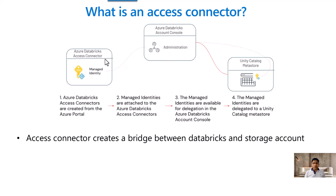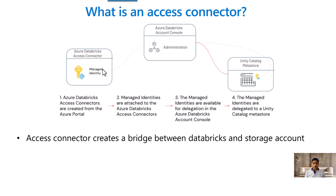You need to grant a specific set of permissions to this connector. For example, if you try to access your storage account, the storage account should give Storage Blob Data Contributor access to the connector's managed identity. Once this connector has access to the storage account items, Databricks will automatically get that access via this connector. The managed identities are delegated to the Unity Catalog Metastore — these same identities delegate permission to the destination sources where it is trying to connect. This connector is essentially a bridge between Databricks and the storage account.